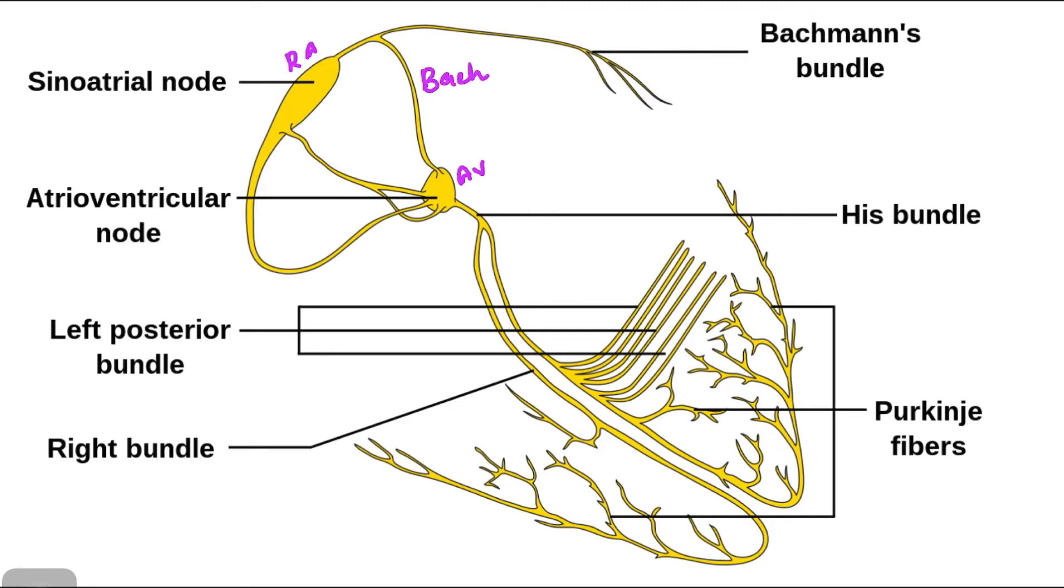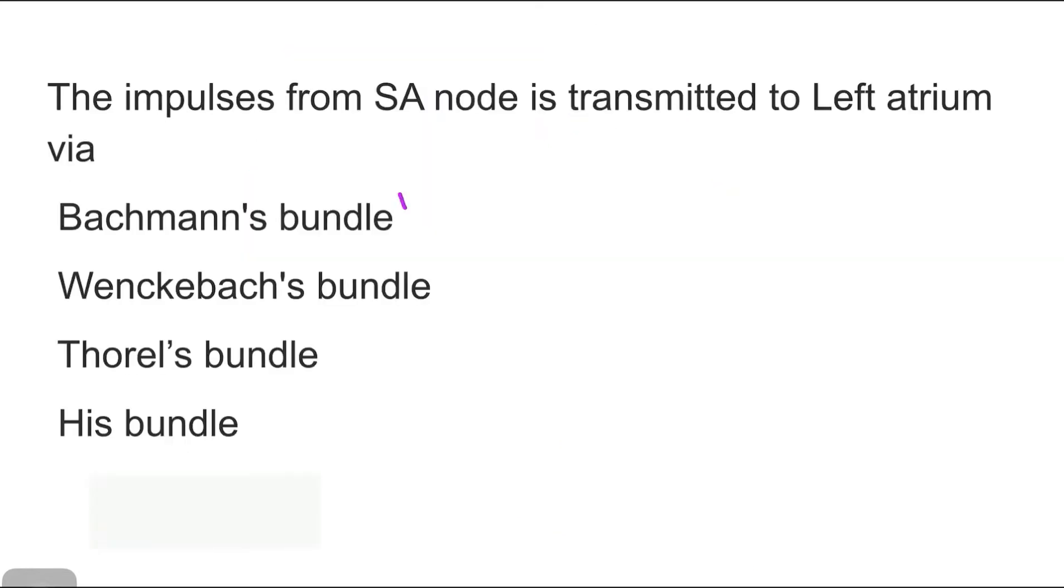They are Bachmann here, Wenckebach here, and Thorel. So the Bachmann is the first pathway, Wenckebach is the middle pathway, and Thorel is the most posterior pathway. So the right answer is Bachmann's bundle.